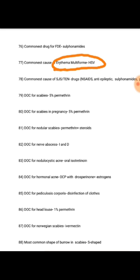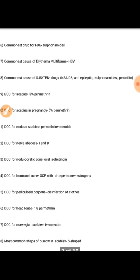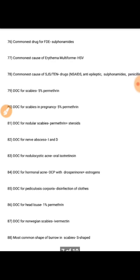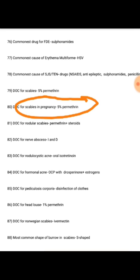Commonest cause of erythema multiforme is herpes simplex virus. Commonest causes of Stevens-Johnson syndrome and TEN are NSAIDs, anti-epileptics, sulfonamides, and penicillin. Drug of choice for scabies is 5% permethrin — also the drug of choice for scabies in pregnancy and for nodular scabies, with steroids added for nodular.